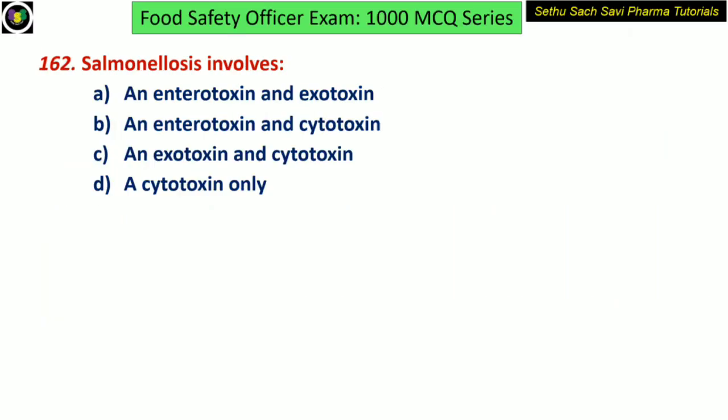Coming to the next question: salmonellosis involves — does it involve enterotoxin and exotoxin, enterotoxin and cytotoxin, exotoxin and cytotoxin, or cytotoxin alone? Yes, it is enterotoxin and cytotoxin.